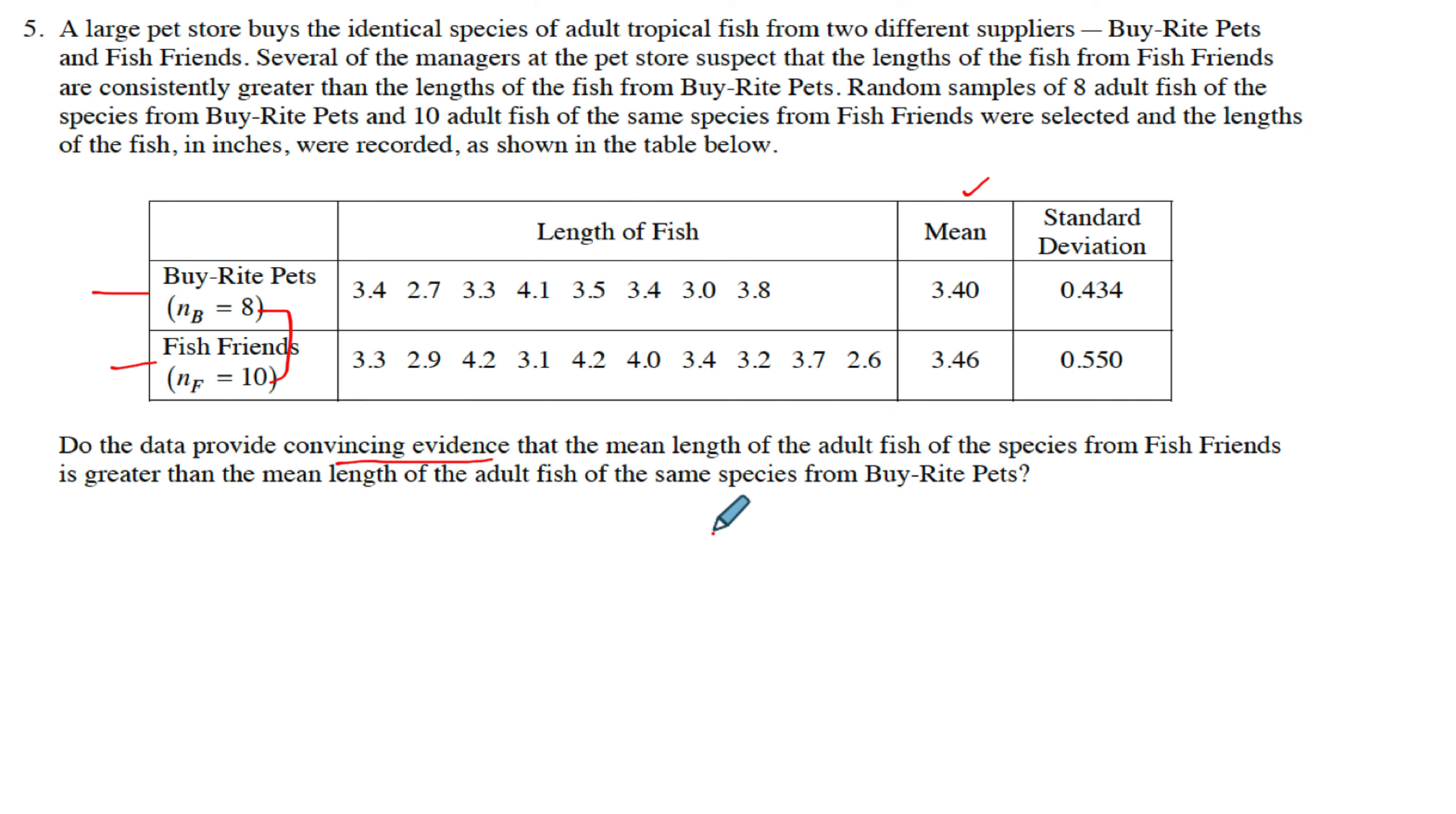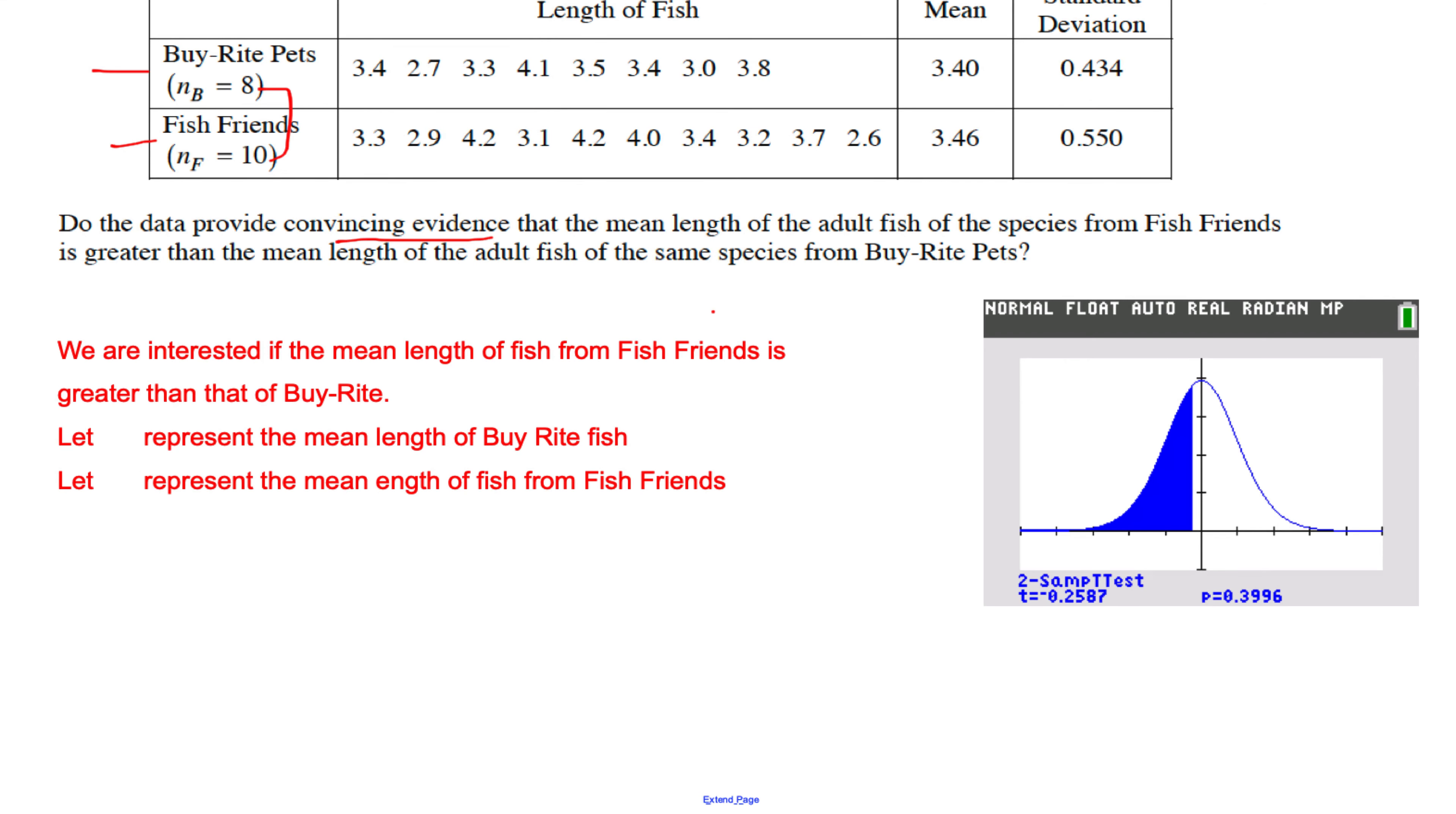Let's write all this up. I did pull that graph over, so you're going to want to sketch the graph all nice and fancy. I always like to tell them what we're interested in. We're interested if the mean fish from Fish Friends is greater than that of Buy Rite.